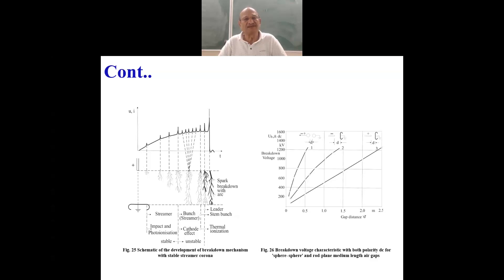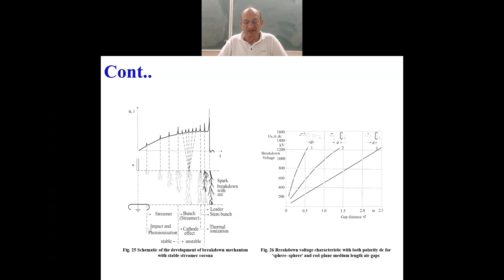When you increase the gap distance further, the field is rendered no more uniform because of the space charge effect and larger avalanches. Above 2 centimeters of gap distance, the space charge effects become significant and the field becomes weakly non-uniform, measuring something like 25 kV per centimeter.